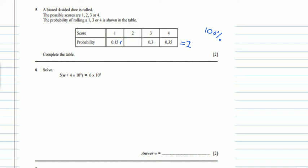So if we add them all, the total should be 1. So this is the unknown one. So if we add 0.15 plus 0.03 plus 0.035, we will have 0.8 plus x is equals to 1.